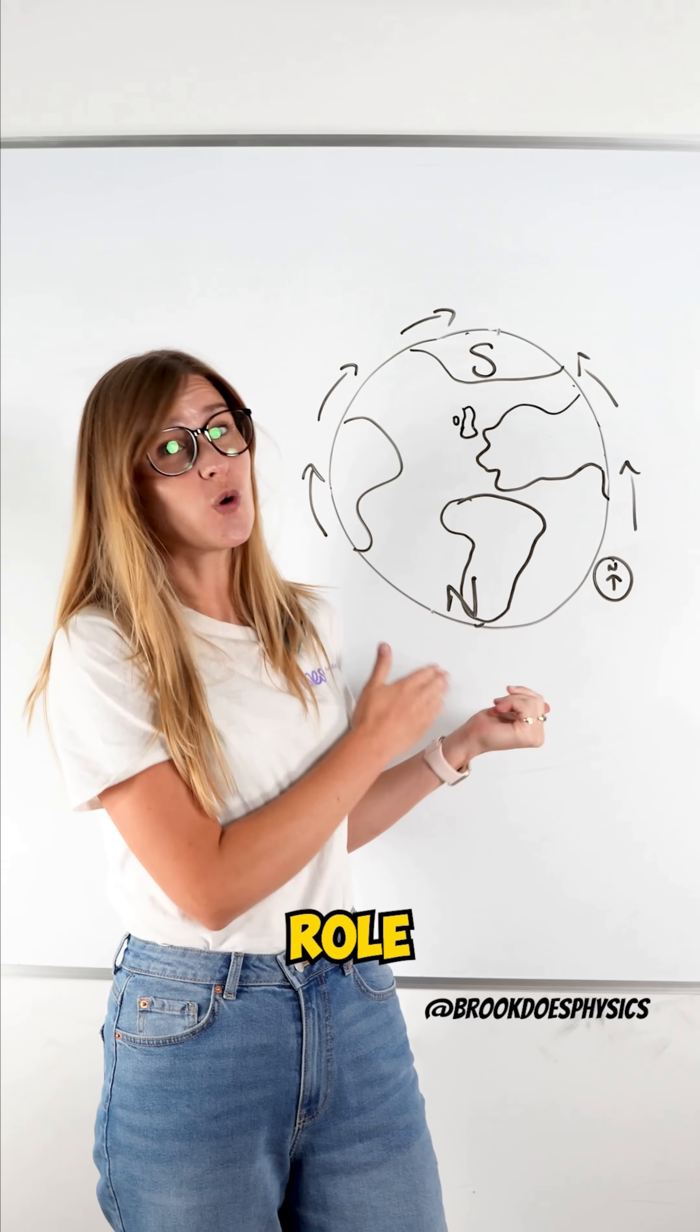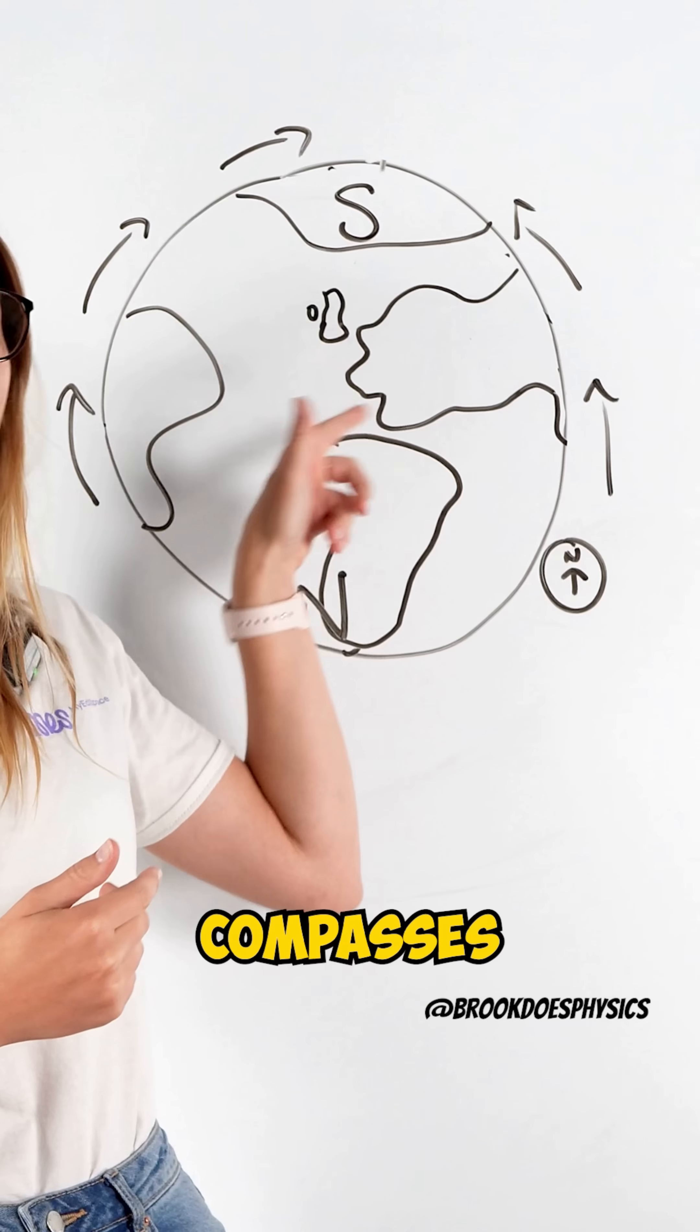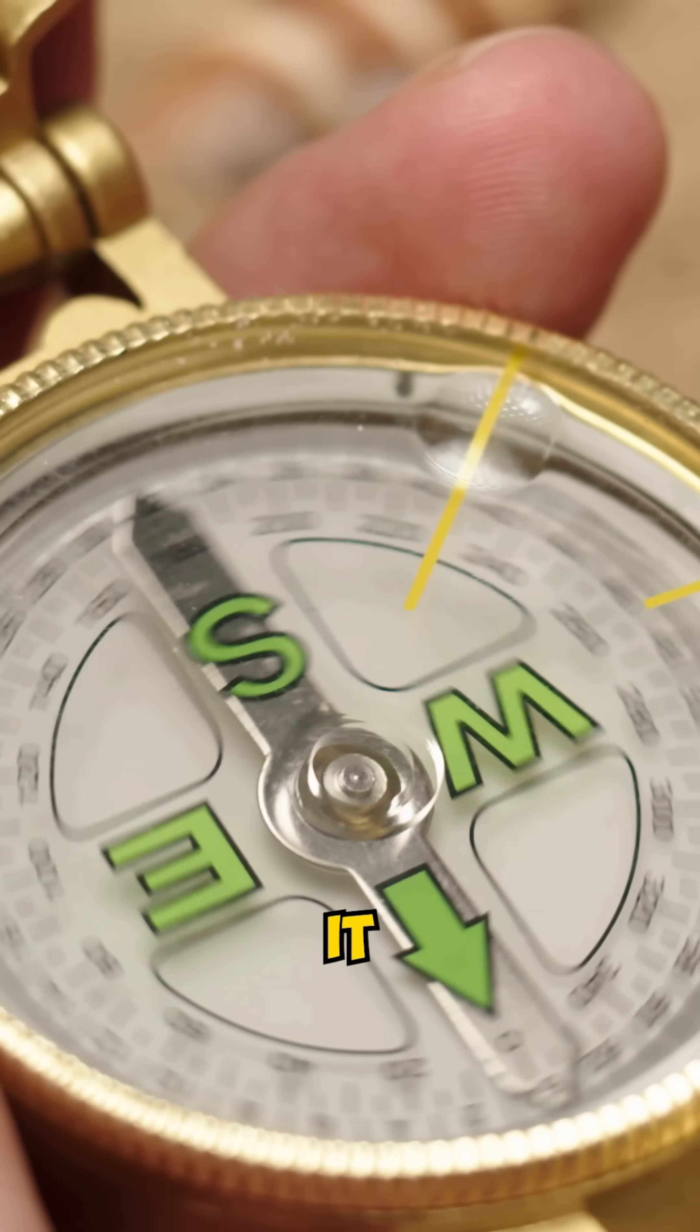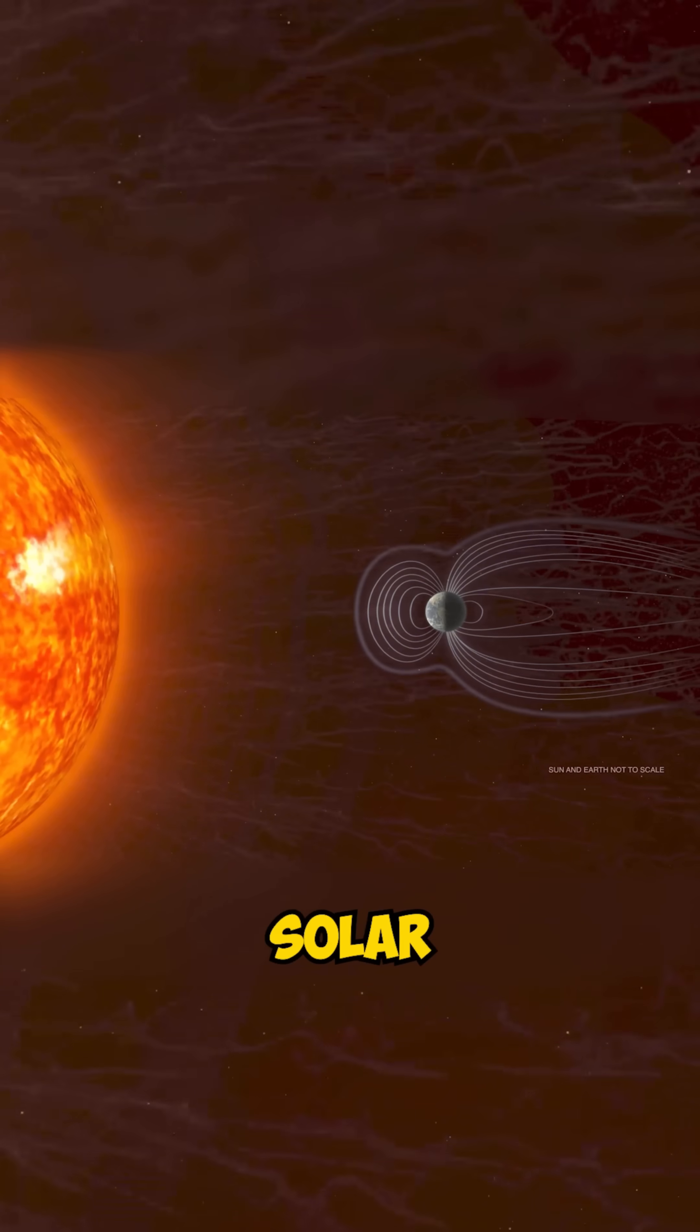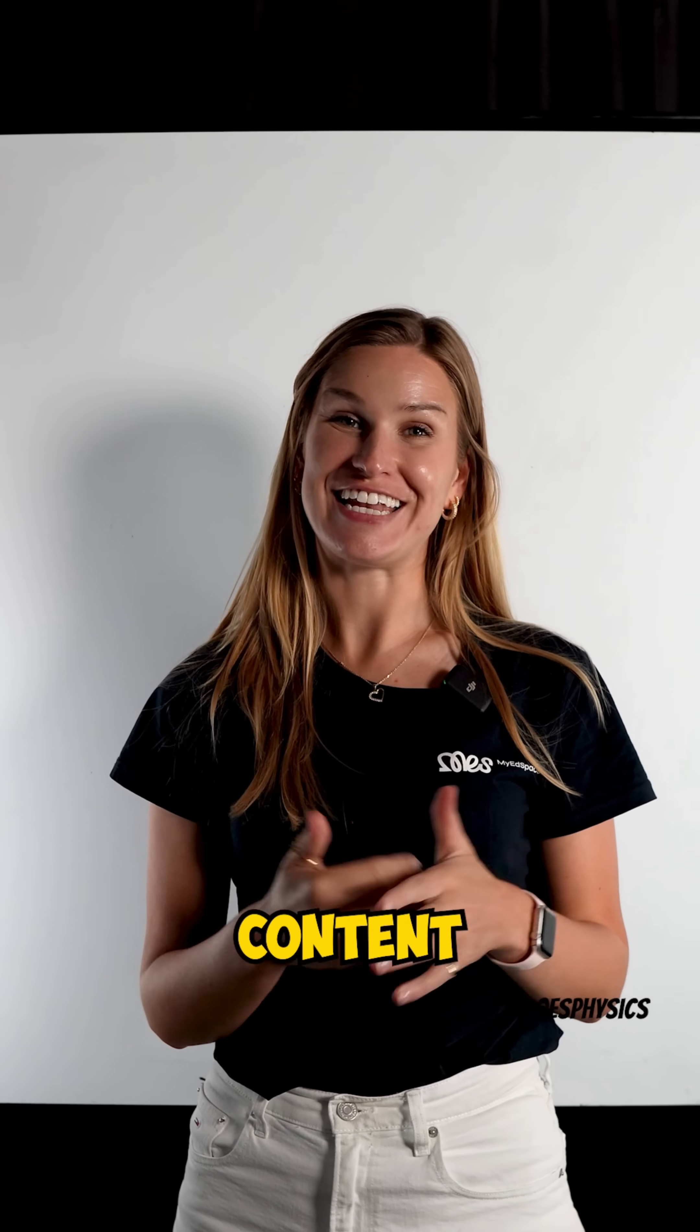The Earth's magnetic field plays a crucial role in making our planet habitable. Not only does it set the direction of compasses, allowing us to navigate, it also acts as a shield of sorts, deflecting the solar wind that could eat away our atmosphere. Follow me for more physics content like this.